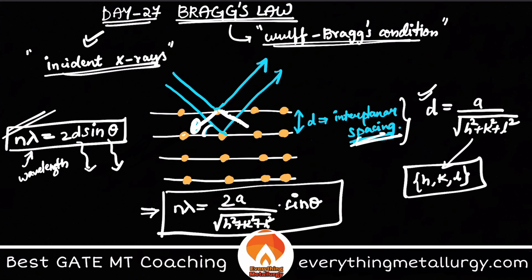This is the same Bragg's Law expressed in terms of lattice parameters and the hkl of the plane. From this we can grasp a lot of information — based on the hkl, we can determine which planes are visible in your diffraction pattern, based on the Bravais lattice or crystal type.